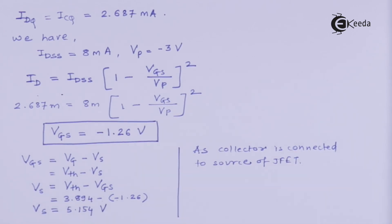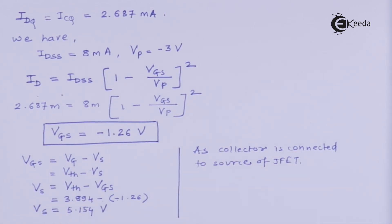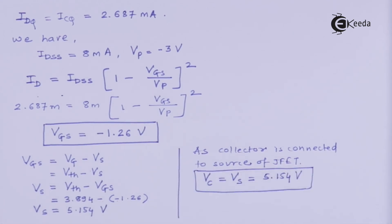Now, the magic is... If collector is connected directly to source of JFET, whatever source voltage is there, I can say that Vc is also same value. So, you can say Vc is equal to Vs is equal to 5.154 volts. Great! So, the value of Vc is equal to Vs is equal to 5.154 volts. Great!